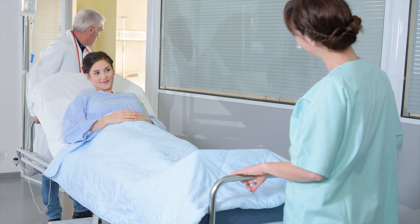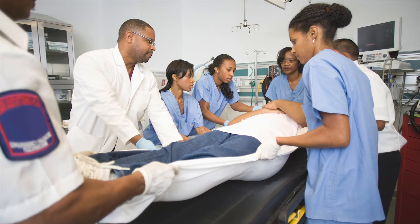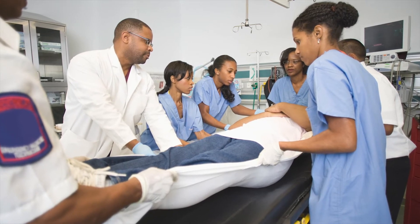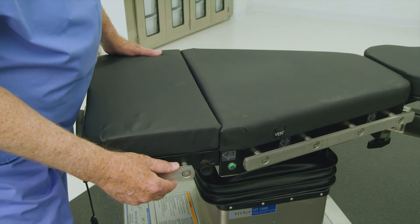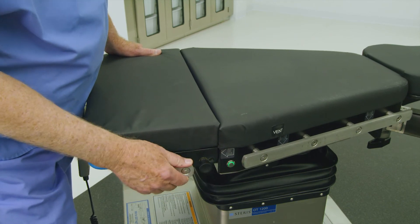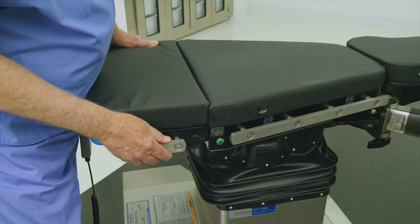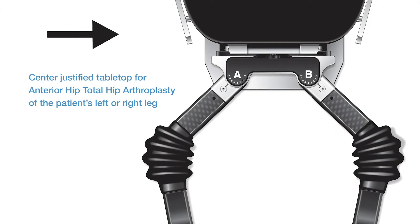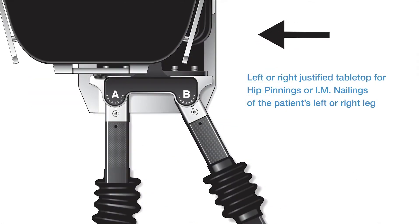Execute patient transfer using facility protocols for safe patient handling and ensure even patient weight distribution. Once the patient is positioned safely on the tabletop's surface, adjust the tabletop by repeating the instructions to obtain the desired lateral tabletop position. The centered position is typical for anterior hip cases, whereas left or right justified positions are typical for an operative left or right leg fracture or trauma procedure, such as hip pinnings or IM nailings.